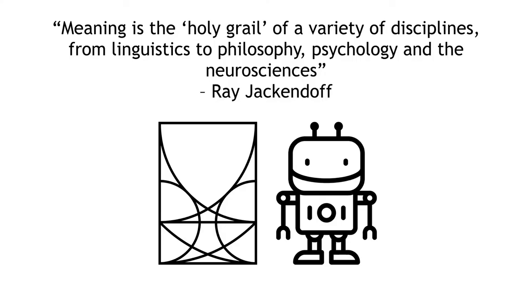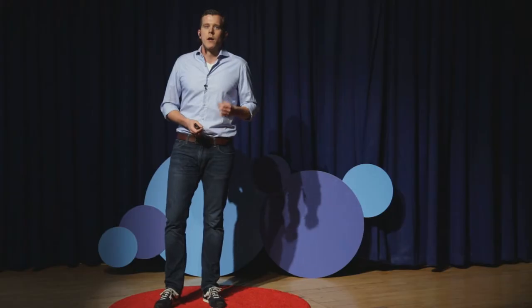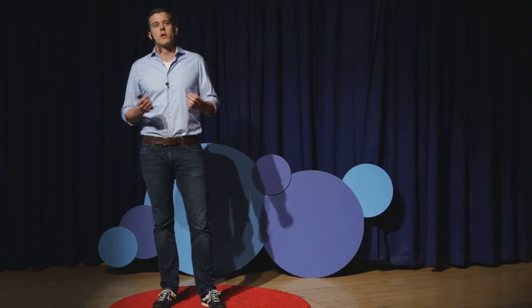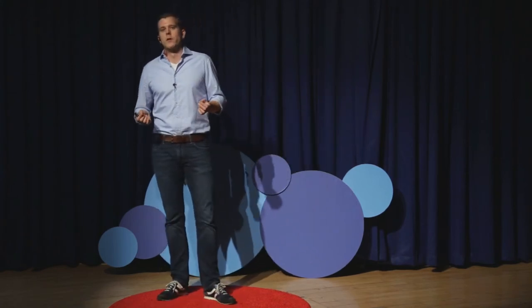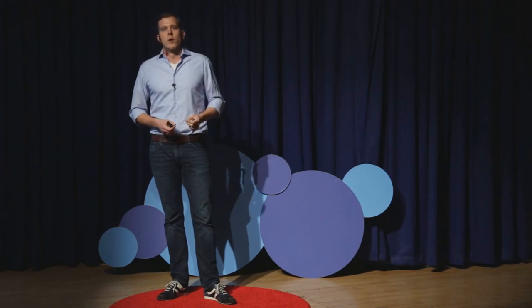The core to getting to common sense is having meaning in computers. The famous linguist Ray Jackendoff has said that meaning is the holy grail of a variety of disciplines — not only linguistics, but also philosophy, psychology, and the neurosciences. I would argue that artificial intelligence is very much part of that list of disciplines where meaning is the holy grail — the end goal. We absolutely need meaning if we want to have common sense reasoning.